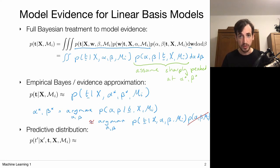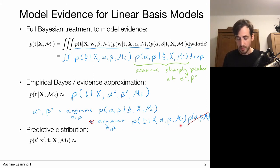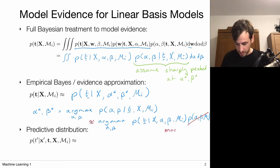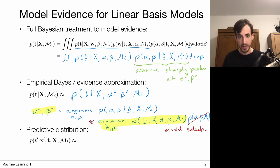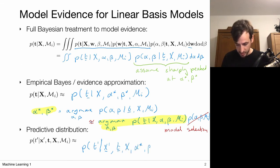We're back to the point of the previous video, where model selection is based on the model evidence. This marginal likelihood is the model evidence for a model parameterized by alpha and beta, so we're optimizing the model evidence over different values of alpha and beta. This is the model selection part where we select the hyperparameters that maximize the marginal likelihood or model evidence. When we've selected the optimal hyperparameters, we end up with a predictive distribution for new data D' given input X', depending on all the training data and selected hyperparameters alpha star and beta star.